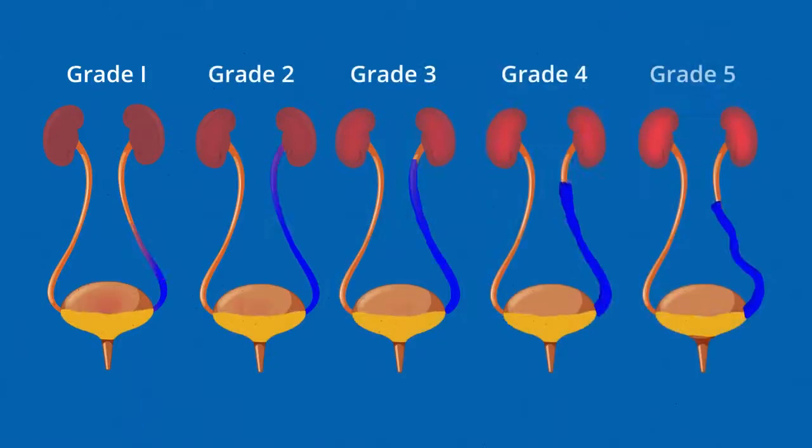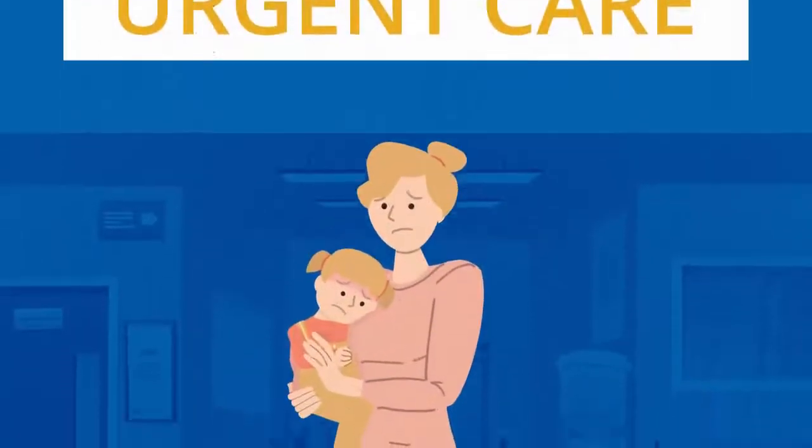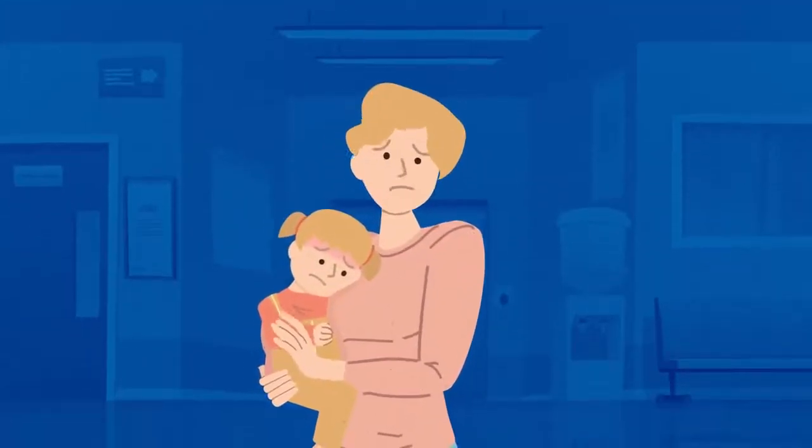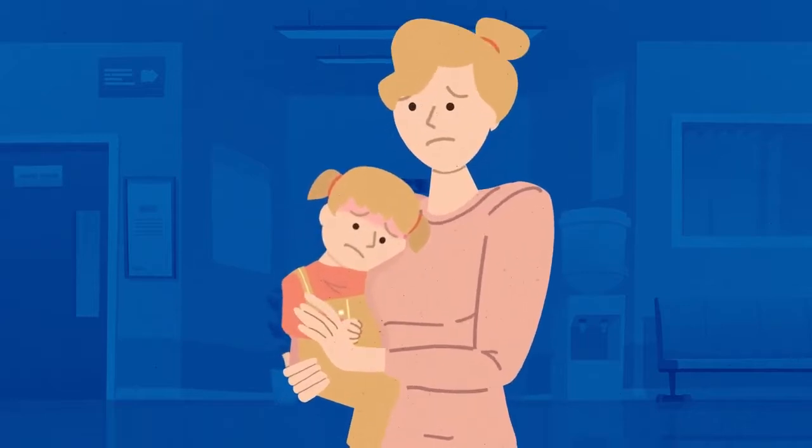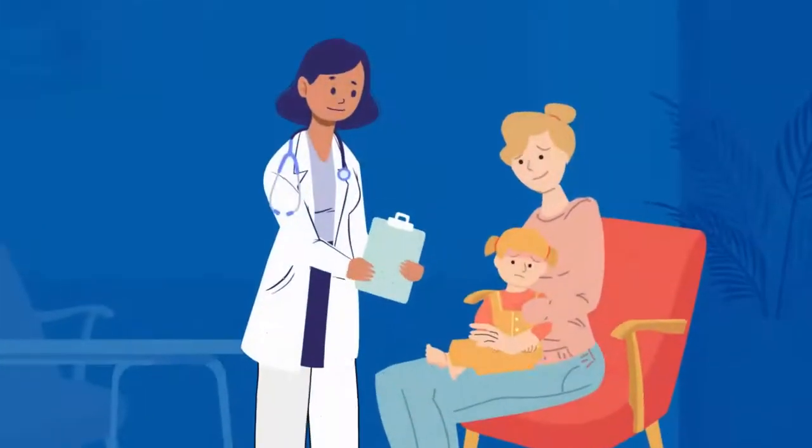VUR is graded 1 through 5 according to how serious it is, with grade 1 being the least severe. Mild cases of VUR can sometimes be resolved on their own, while other more serious cases will continue to come back and can cause more severe problems.